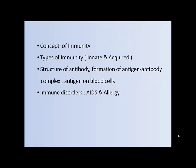Immune system. In this we will see the concept of immunity, types of immunity — that is innate and acquired — structure of antibody, formation of antigen-antibody complex, antigen on blood cells, and immune disorders that is allergy and AIDS.